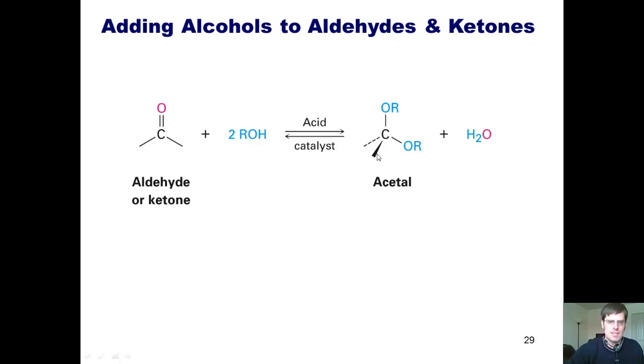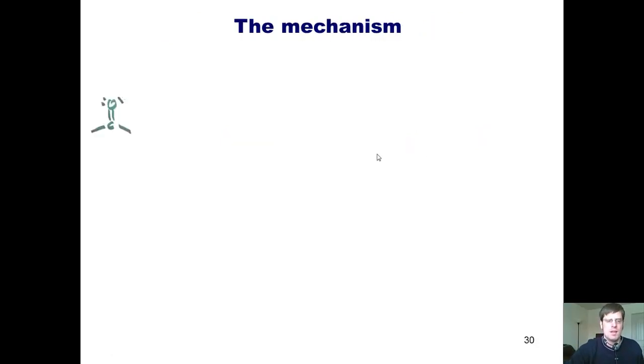And what is the mechanism? Well, first I begin with my ketone. I have to add trace amount of acid, the electrons on the oxygen in that ketone, and this could also be an aldehyde by the way, reach out and grab that acid protonating the oxygen to give this intermediate.